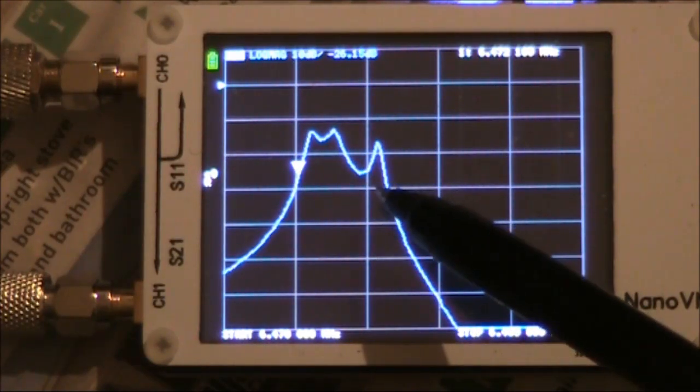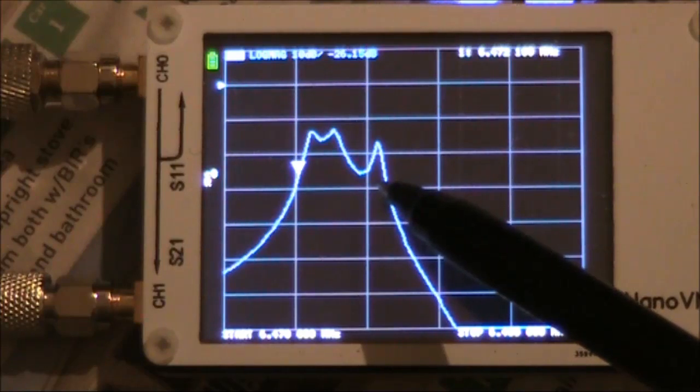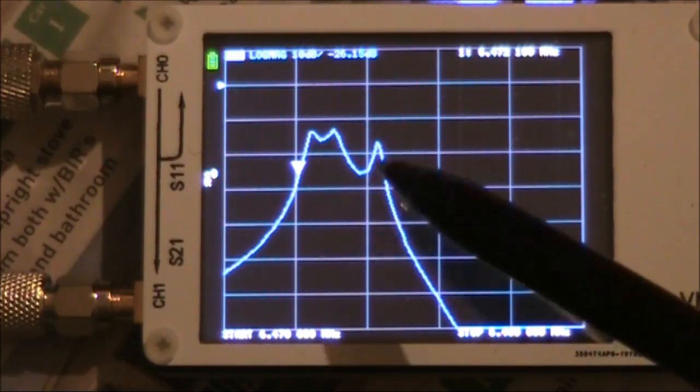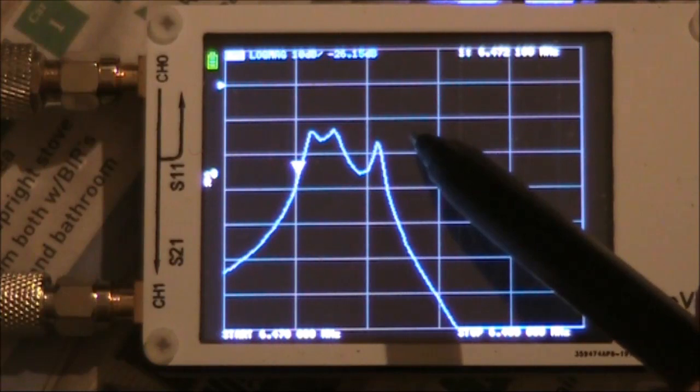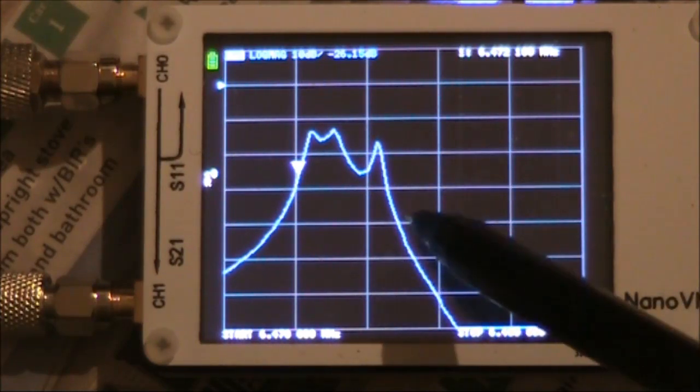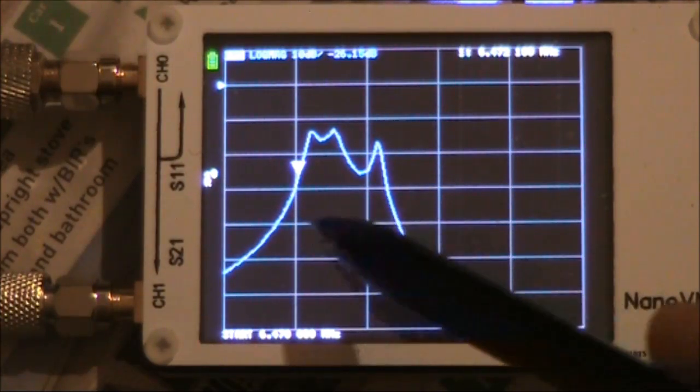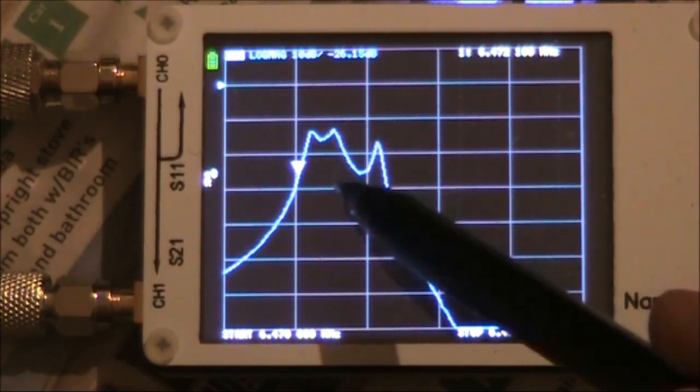So that would be satisfactory for an SSB transceiver. However, my comments before about the carrier oscillator being here, so that you'd get a lower sideband signal, still apply, given you've got that dip here.